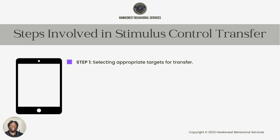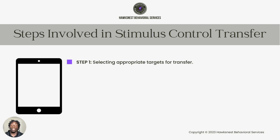The steps involved in stimulus control transfer: the first step is selecting appropriate targets for transfer. These are going to be skills — targets that the learner has already acquired. We're not going to attempt to transfer skills we're actively working on because they haven't acquired that skill yet, so it's hard to focus on them independently utilizing, generalizing, or maintaining it.